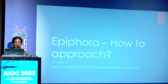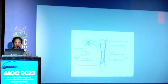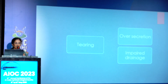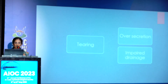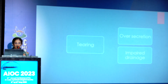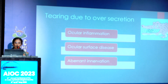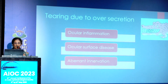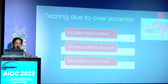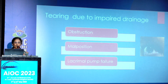Epiphora is a very common complaint ophthalmologists face in day-to-day OPD. We all know the structure of the lacrimal system and that abnormality anywhere can cause epiphora. Broadly, tearing is divided into over-secretion, known as lacrimation, or impaired drainage, known as epiphora. In practice we see a combination of these factors. Over-secretion can be due to ocular inflammation, ocular surface disease causing reflex tearing, or aberrant innervation of the seventh nerve causing watering while chewing, as seen in crocodile tears. Another rare entity is hypersecretion syndrome.